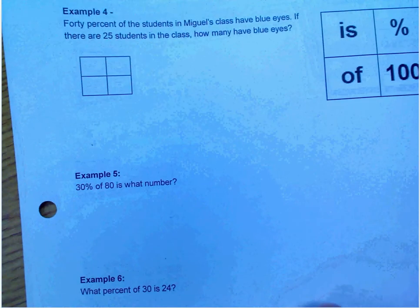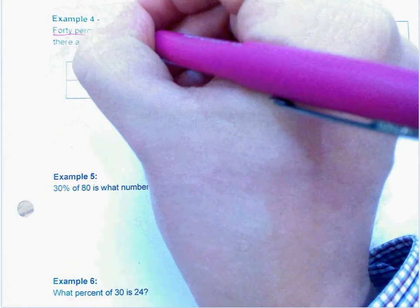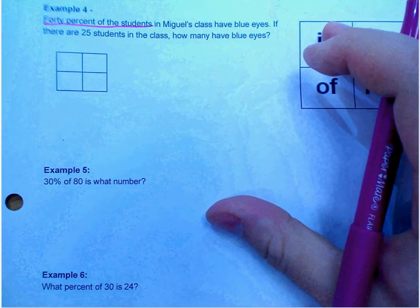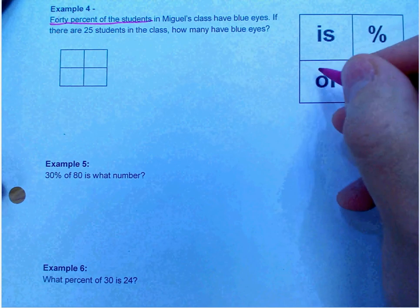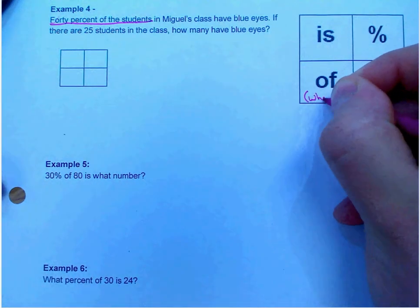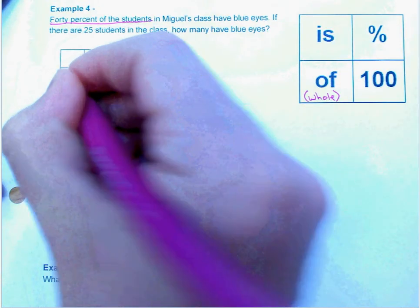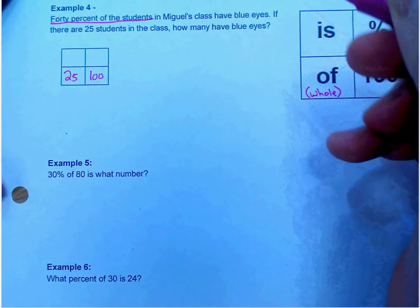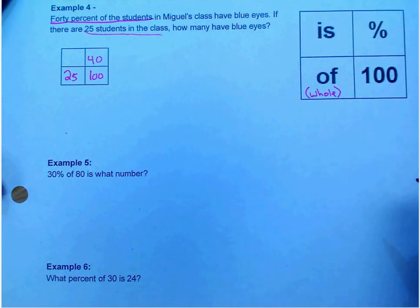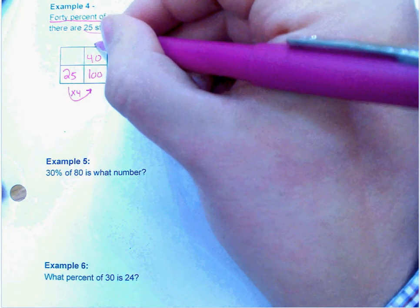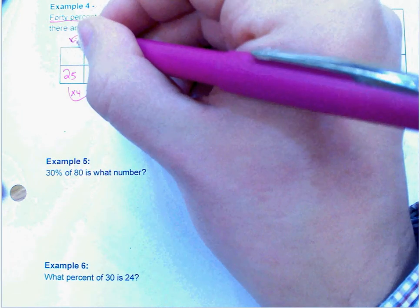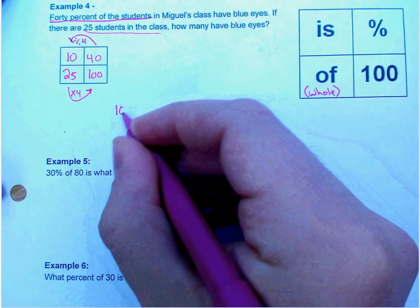Let's take a look. Example number four. 40 percent, we're getting tricky in writing it as words, of students in Miguel's class have blue eyes. If there are 25 students in the class, how many have blue eyes? This is a little bit different because it's my of. That's my whole. The whole class is 25 kids, so I know that this goes down here. 25, 100. And we know that we have 40 percent of the students. So when I'm looking, what do I multiply 25 by to get to 100? We know that 25 times 4 is 100. So I have to divide 40 by 4 to get 10. So 10 students in Miguel's class have blue eyes.